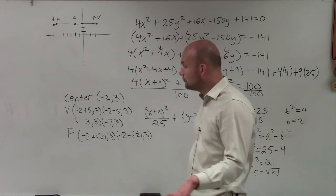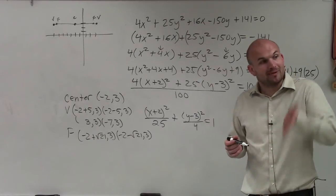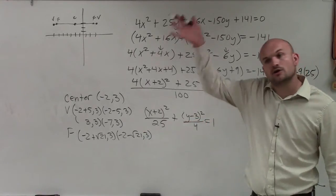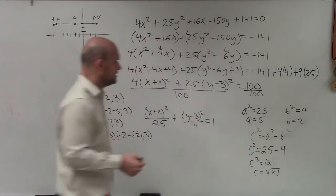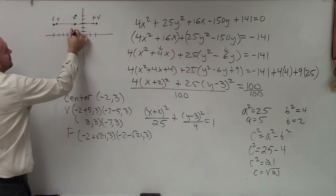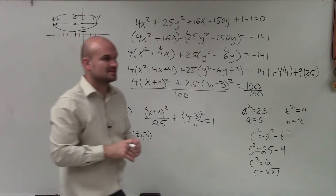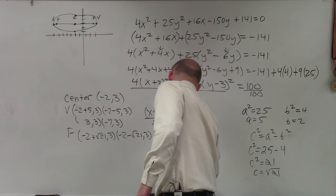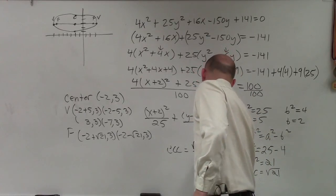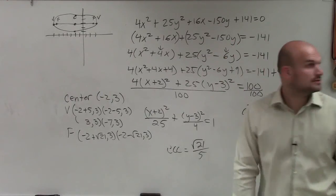The last thing is the co-vertices. The co-vertices, remember, is your b, but they're on the perpendicular from your major axis. So if your major axis is horizontal, your co-vertices are going to be vertical. So b is 2. So then I'll just go up 2 and down 2. And that's my lovely ellipse. I think they did ask us to do the eccentricity. Eccentricity is going to be c over a. So it's square root of 21 over 5. And that's it.